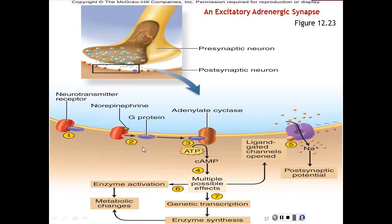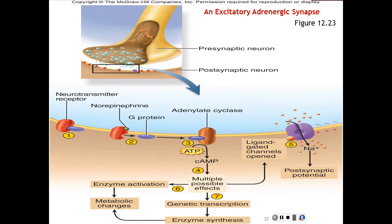Once released, the G-protein binds to the enzyme adenylate cyclase, inducing it to convert ATP (adenosine triphosphate) to cyclic AMP (adenosine monophosphate). Cyclic AMP can induce several alternative effects inside the cell: it can produce an internal chemical that binds to a ligand-regulated ion gate from inside the membrane, opening the gate; it can activate pre-existing cytoplasmic enzymes that affect metabolism; or it can induce genetic transcription so that new enzymes are produced.